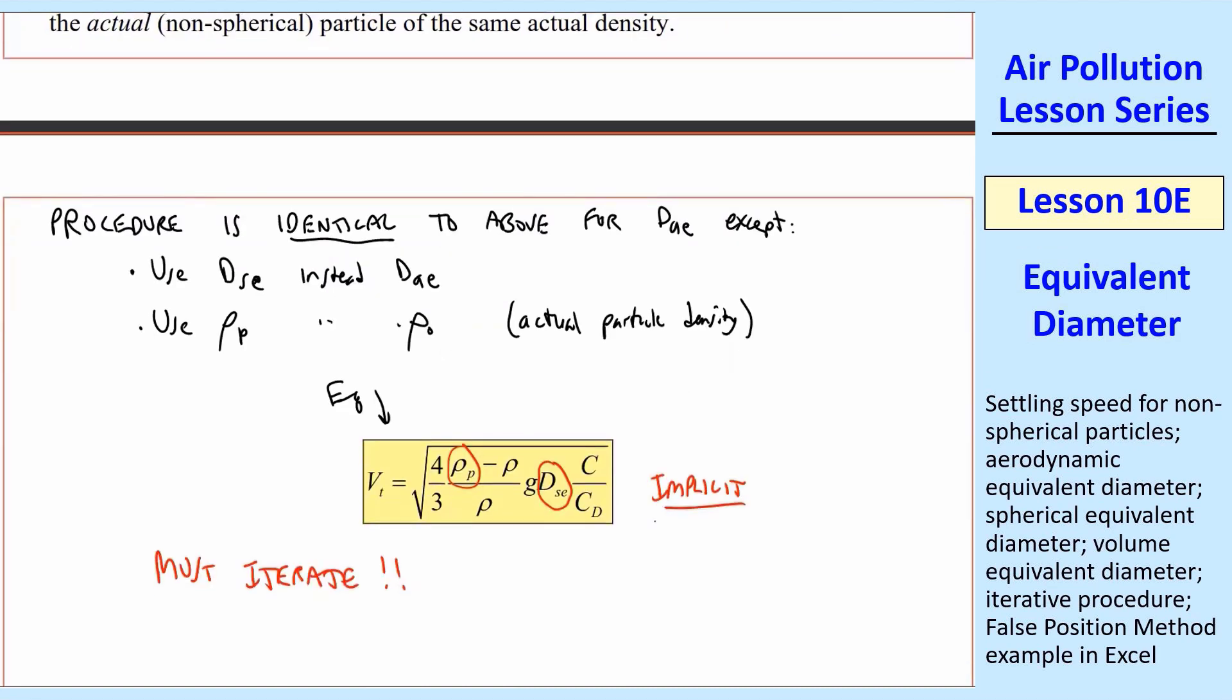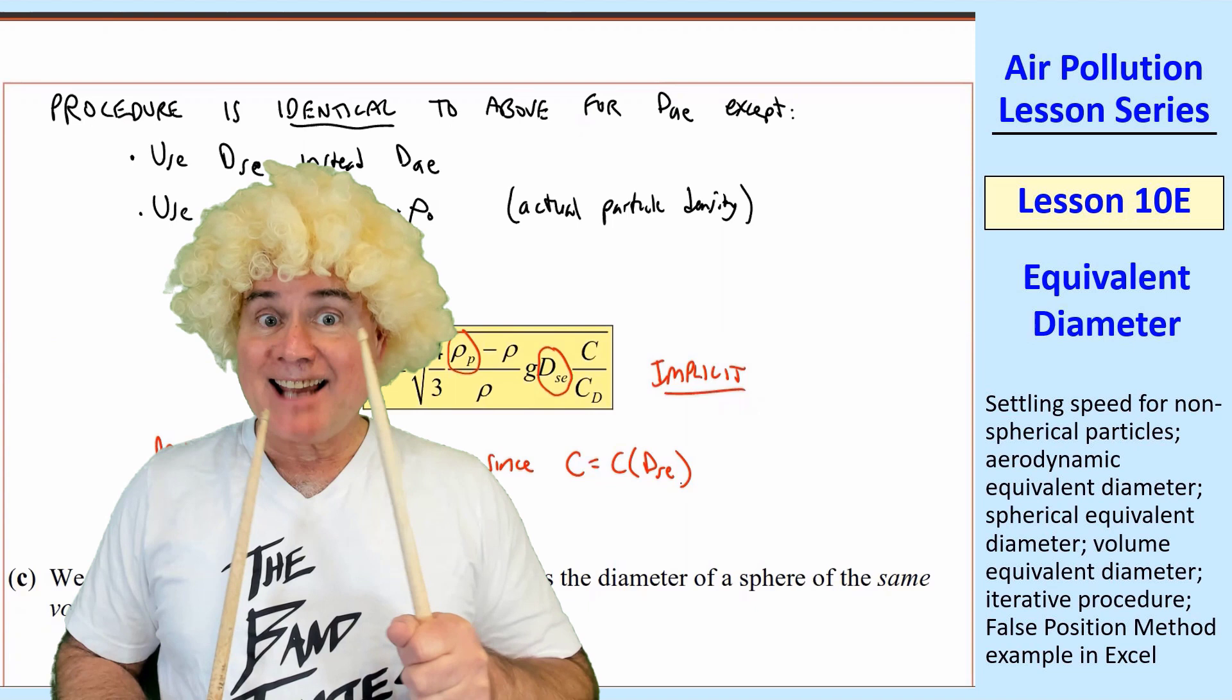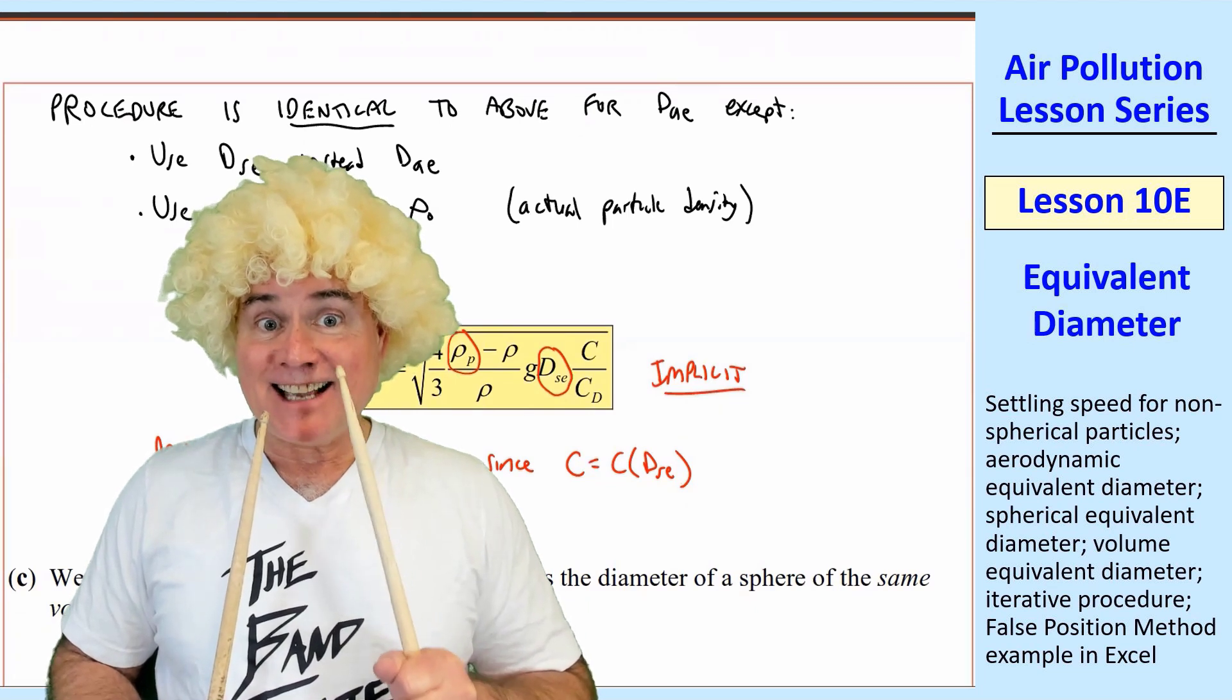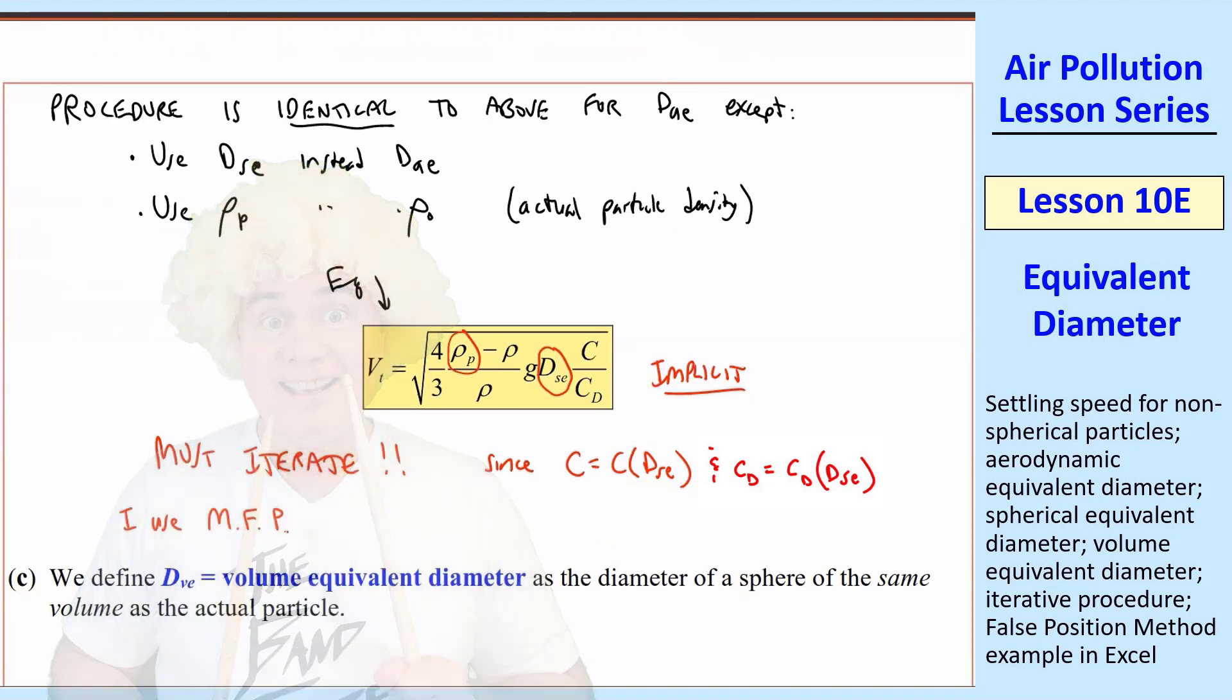Again, this is implicit. Again, you must iterate. Why? Cunningham correction factor is a function of dₛₑ. So we have that same problem that we had before. And Cₐ is a function of dₛₑ as well. You are correct again, BJ. I use the method of false position just as I did in the previous case.